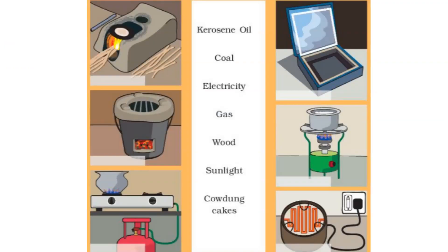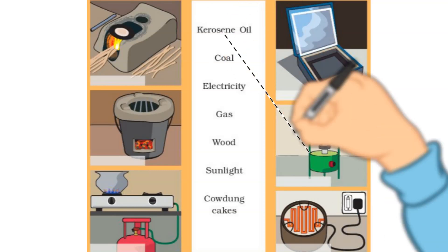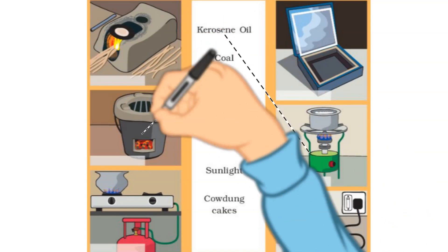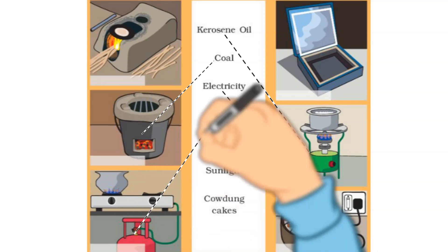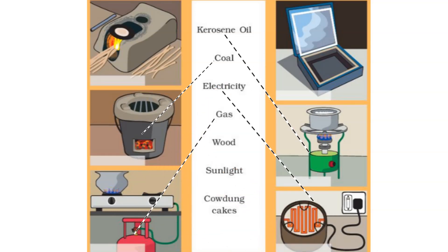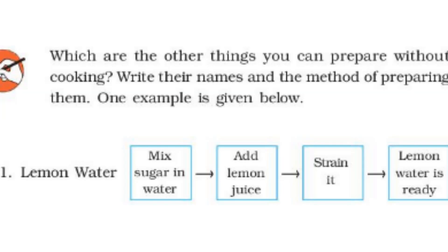Now we have to match the pairs according to how we generate heat for cooking. Kerosene oil is used in a stove — a green stove is shown. Coal is used in a coal stove. Electricity is used in an electric heater or electric baking machine. Gas is used with a gas cylinder connection to cook food. Sunlight is used in a solar heating panel. Cow dung cakes can also be used in a wooden stove.